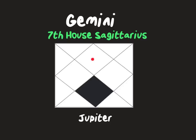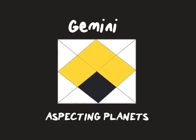For Gemini ascendant, the 7th house Sagittarius is your Baddaka house. Any planets in Sagittarius have Baddaka effect. Note Jupiter, the Baddaka lord of this house — where has Jupiter gone in your chart? That house is going to have Baddaka impact. Note any conjunctions to Jupiter as they will also cause a Baddaka effect. Any planets in the Gemini rising sign, 4th house of Virgo, and 10th house of Pisces will be impacting Baddaka also by their Rasi aspect.